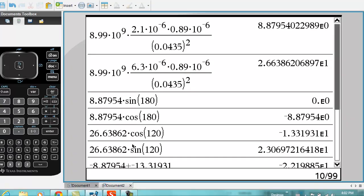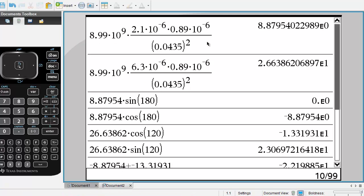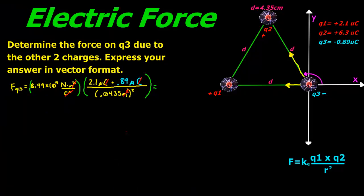Going to our calculator, we get roughly 8.9 newtons — more precisely 8.87954 newtons. Now on to the force from Q2 to Q3. We do the same thing: K times Q2, which is 6.3 microcoulombs, times the charge of Q3, which is 0.89 microcoulombs, divided by 0.0435 meters squared.